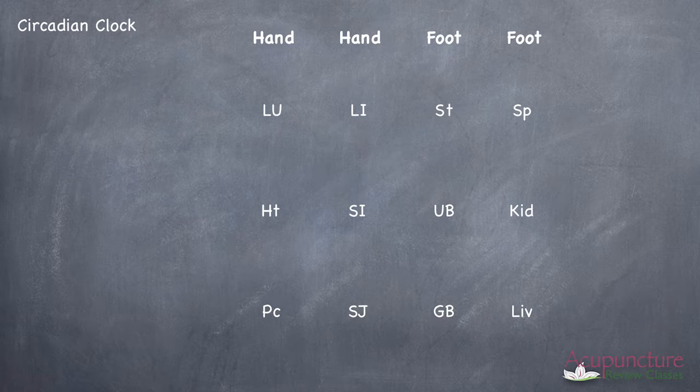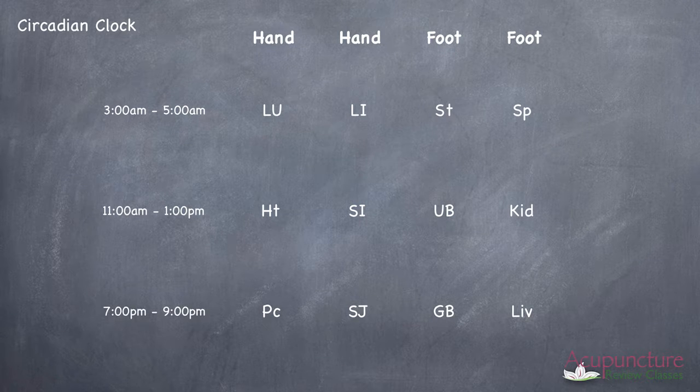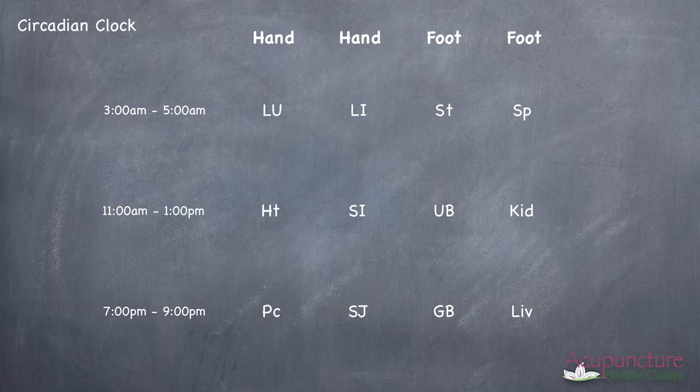Next to the lung, you want to write in the time 3 o'clock AM to 5 o'clock AM. That's the time of the lung. Go to the heart and write in 11 AM to 1 PM, and that goes with the heart. On the pericardium, you want to write in 7 PM to 9 PM for the pericardium.